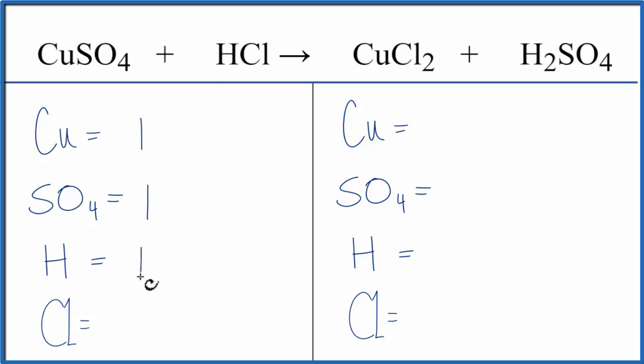One H and then one chlorine atom. On the product side, we have one Cu, two Cls, two Hs, and then just one sulfate.